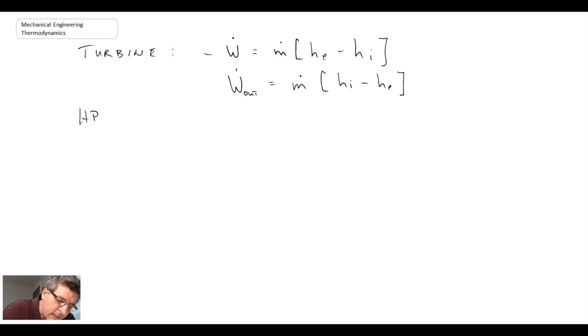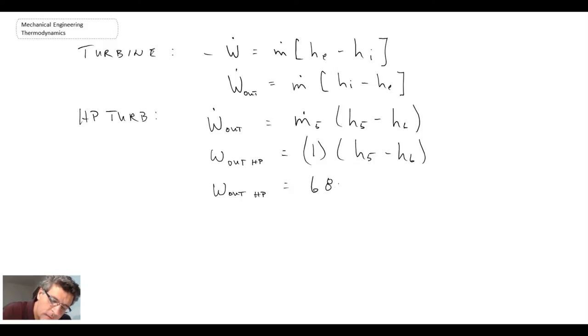We'll look at the high pressure turbine first. And if you recall, all of the mass flow is going through the high pressure turbine. We haven't stripped anything off yet. I'm now going to express that in terms of a per unit mass, so we're dividing by m.5. Plugging in values, we get output for the high pressure turbine, kilojoules per kilogram. And now that's per kilogram mass through the boiler.